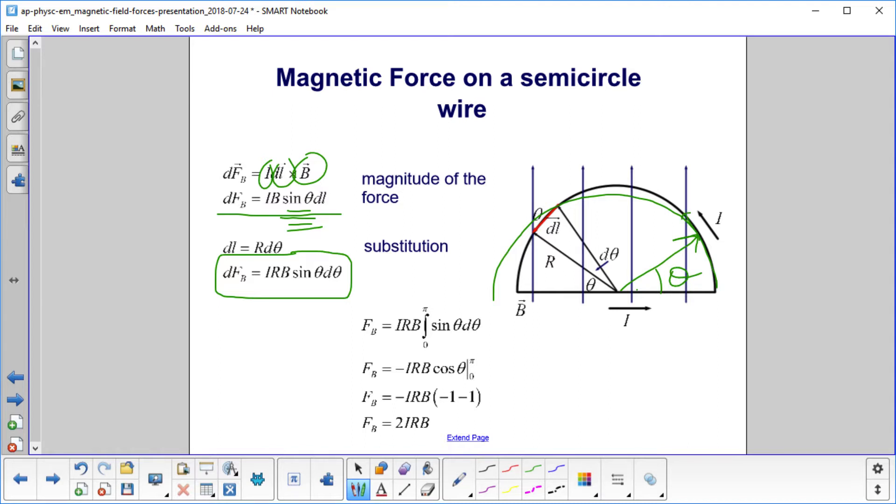And that's what I put in for the limits. I took out IRB because they're constant. You integrate sine theta. You get minus IRB cosine theta evaluated between pi and zero. You do the little math then. And then the force is 2IRB.